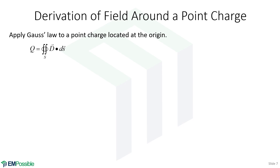Everything in electrostatics has to come from Maxwell's equations, and we just presented this equation seemingly from nowhere. Here I want to show that the equation for electric flux around a point charge really does come from Maxwell's equations. We start with Gauss's law — we're integrating the electric flux around some closed surface that encompasses a charge, and that gives us the total charge Q.